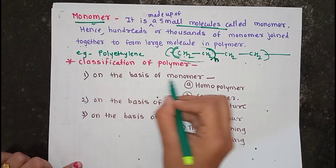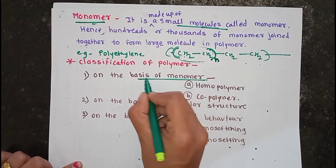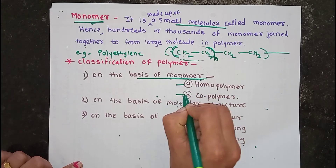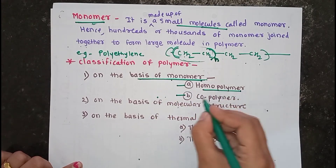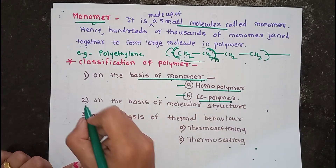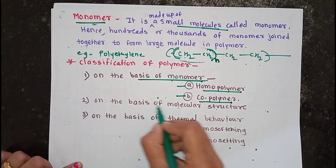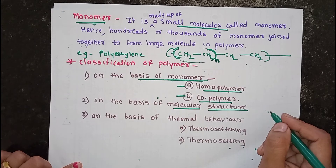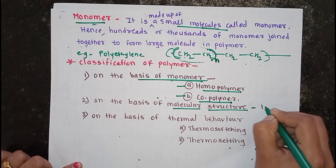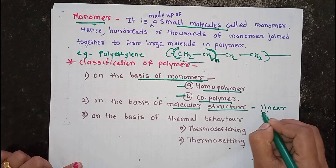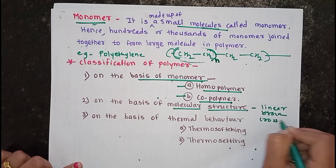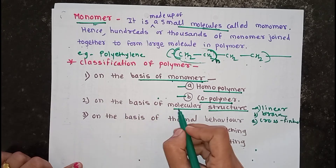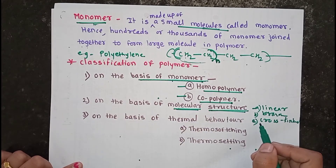The first type of classification is on the basis of monomers. Based on the monomers present, polymers are classified into two types: homopolymers and copolymers. The second classification is on the basis of molecular structure, which gives three types: linear polymers, branched polymers, and cross-linked polymers.